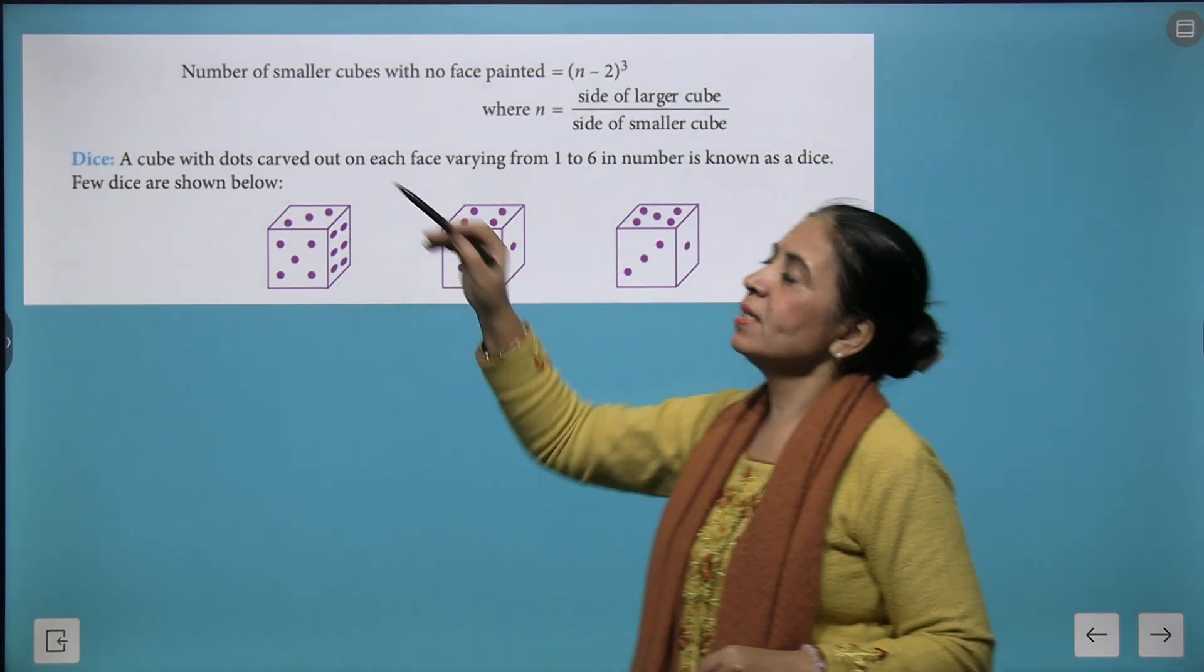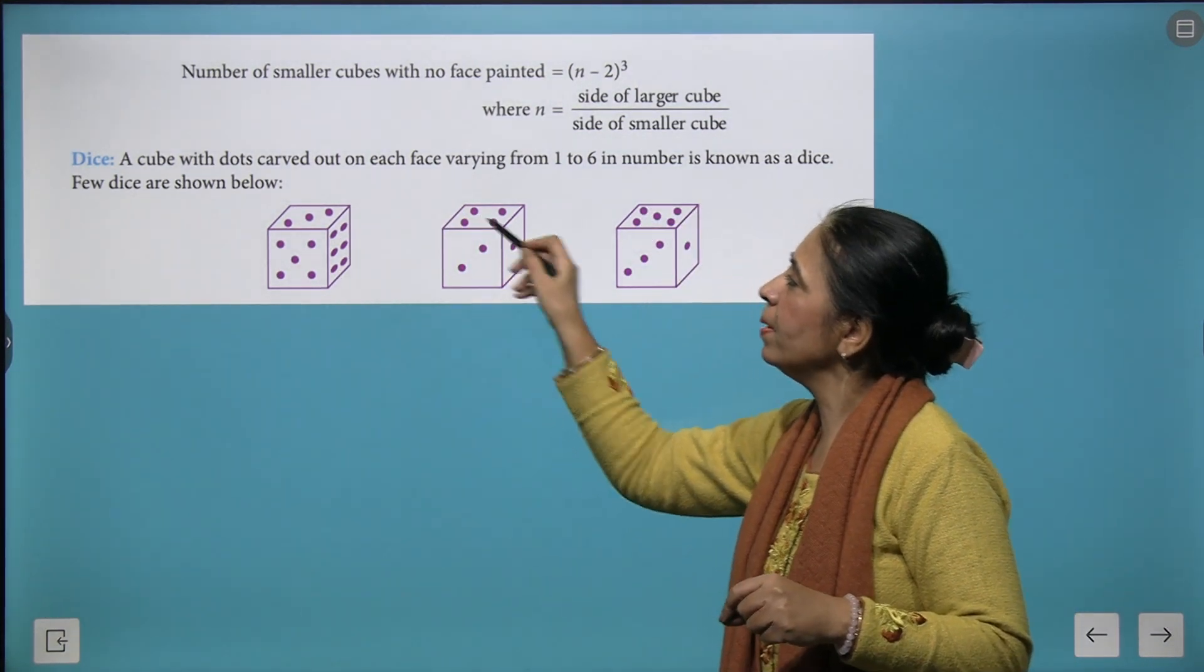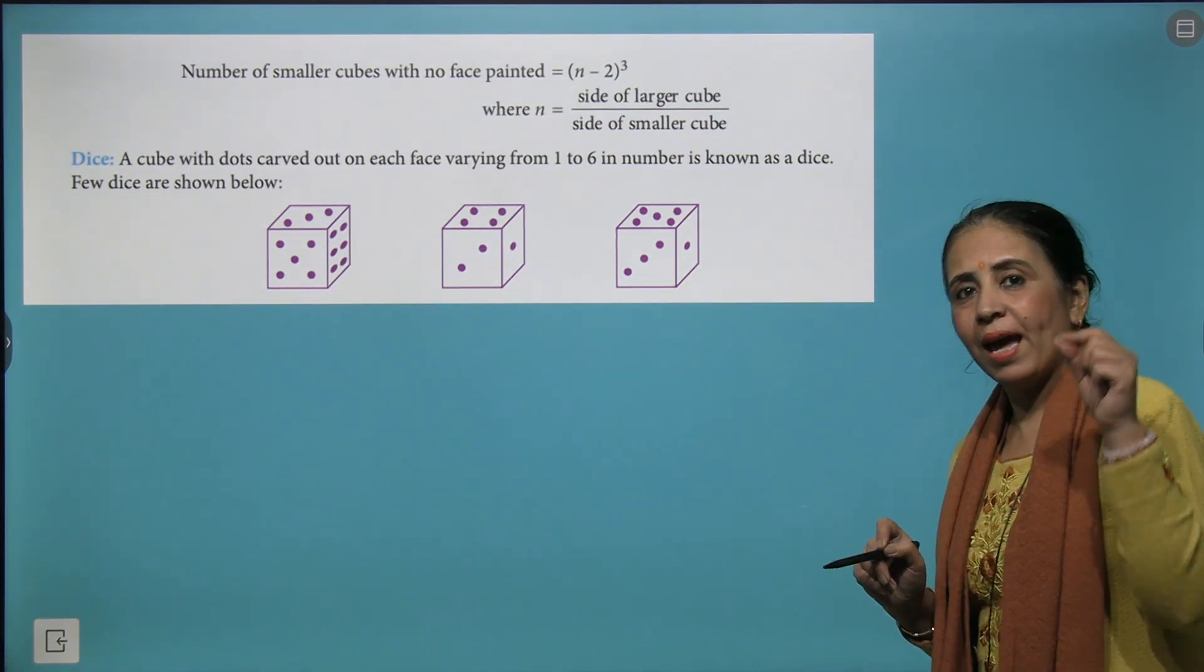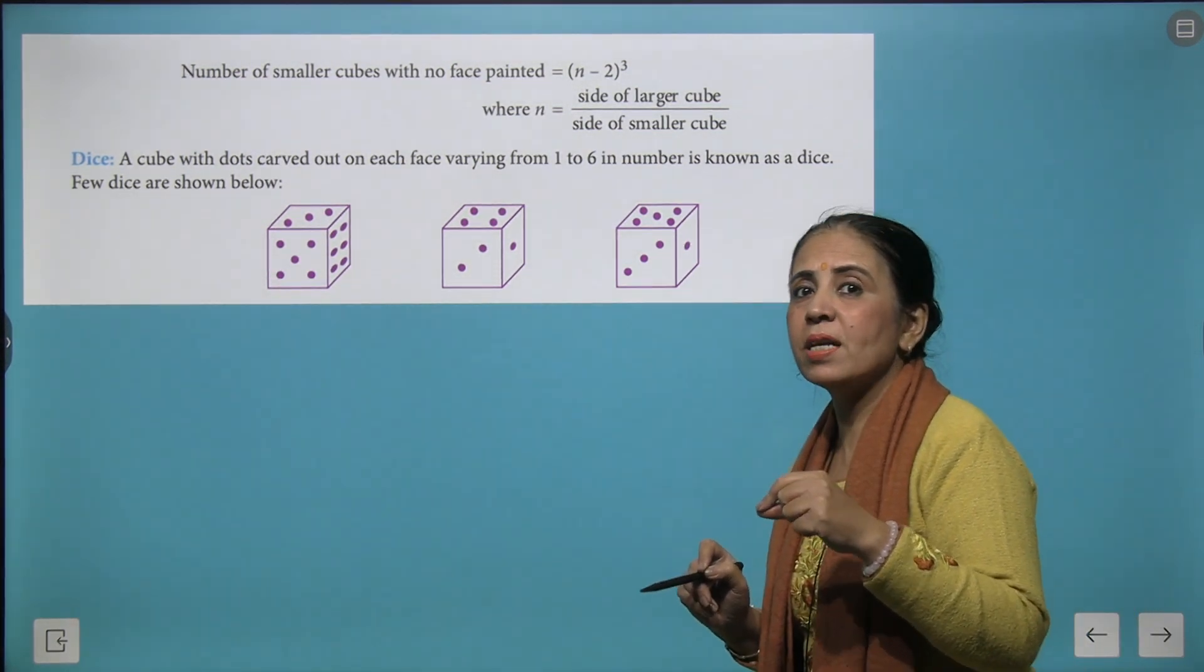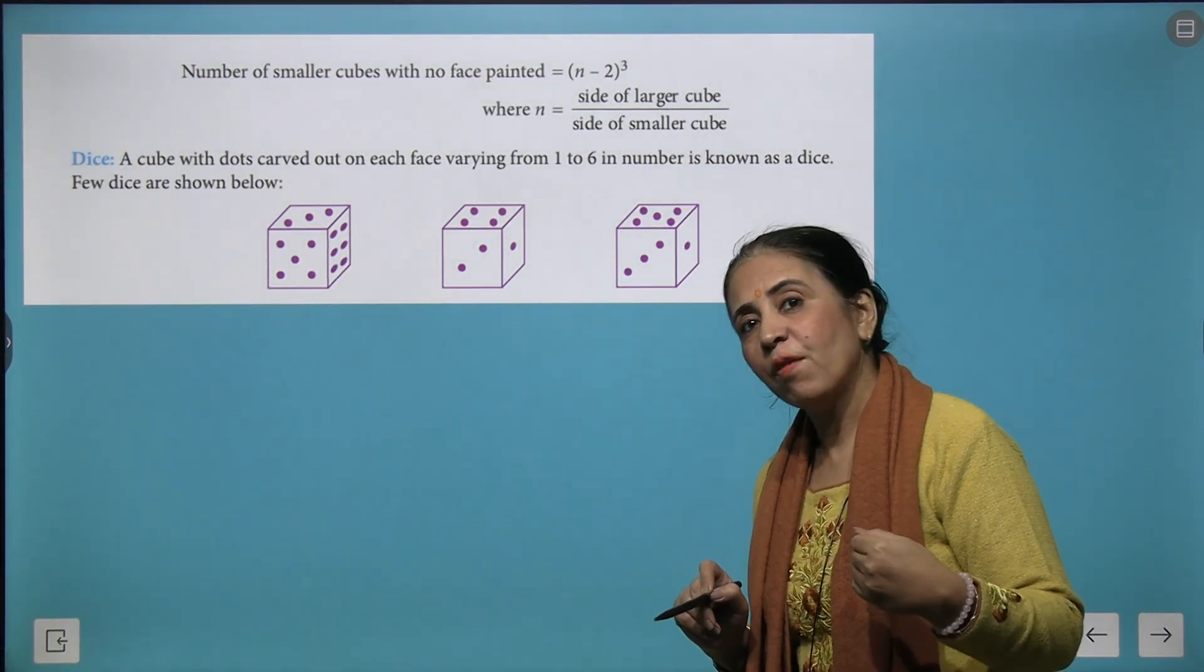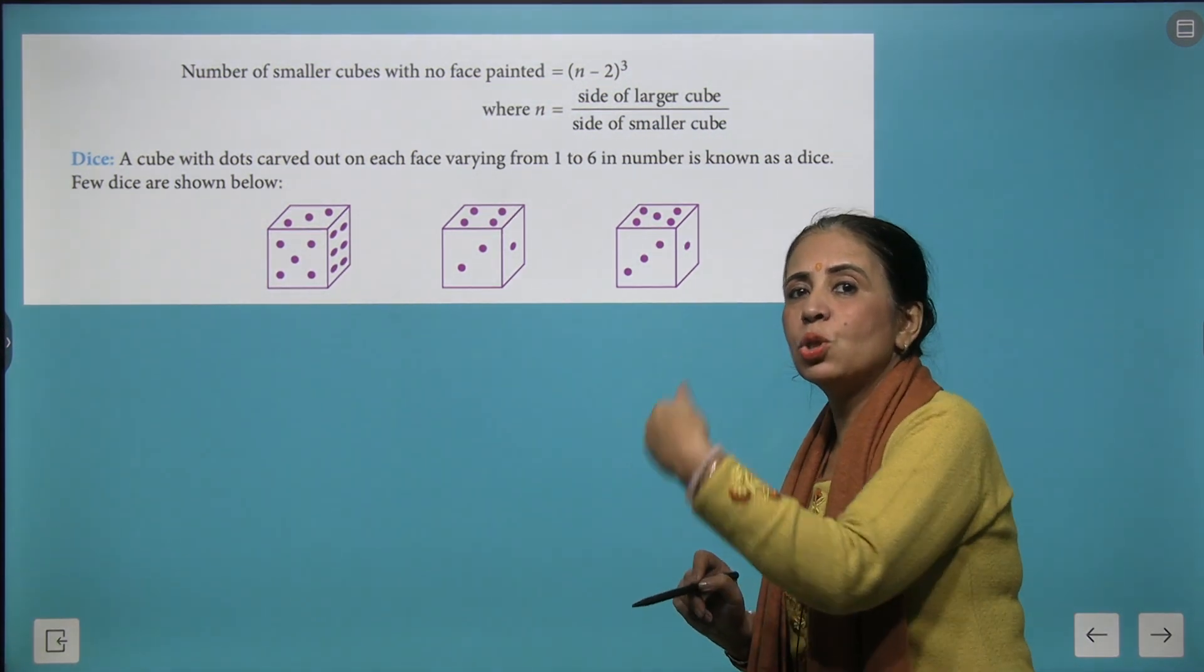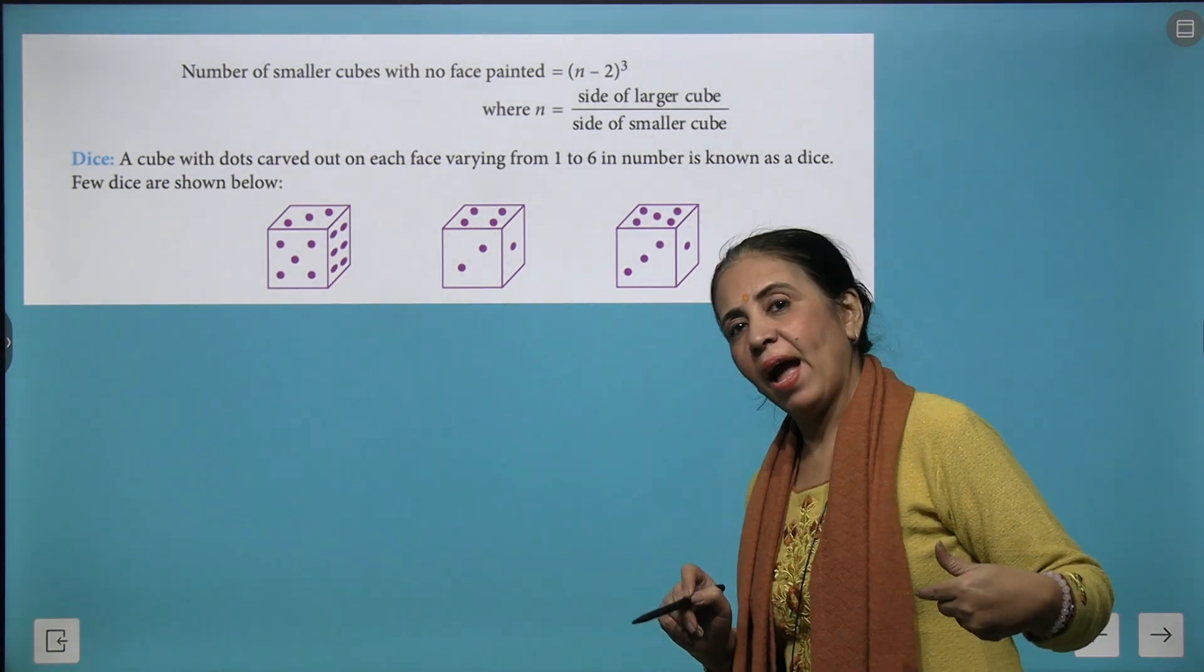Now what is dice? When you have some numbers imposed on every face of the cube and it has 6 faces. So these 6 faces have different numbers. 1, 2, 3, 4, 5 and 6. We call them dice.